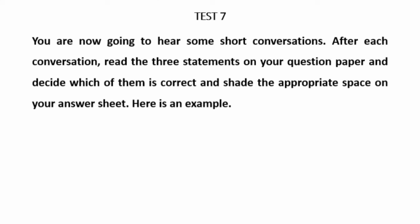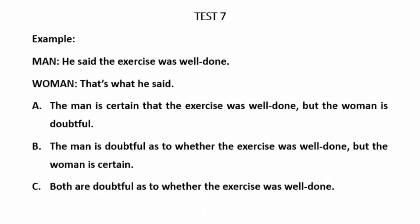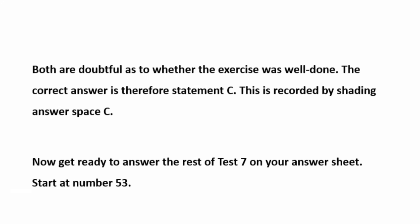Test 7. You are now going to hear some short conversations. After each conversation, read the three statements on your question paper and decide which of them is correct. Share the appropriate space on your answer sheet. Here is an example. He said the exercise was well done. That's what he said. But are doubtful as to whether the exercise was well done. The correct answer, therefore, is statement C. This is recorded by shading answer space C. Now get ready to answer the rest of test 7 on your answer sheet. Start at number 53.